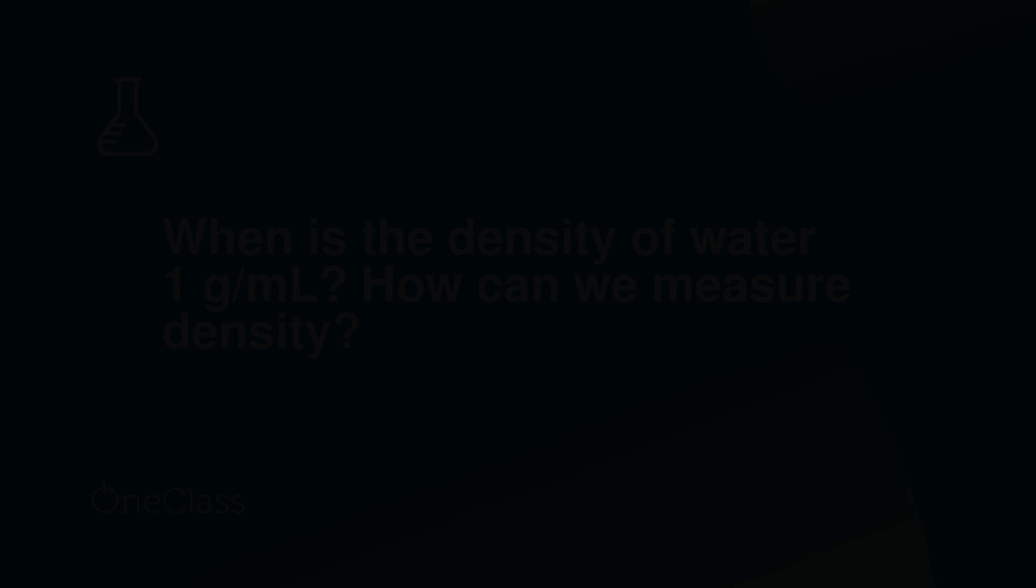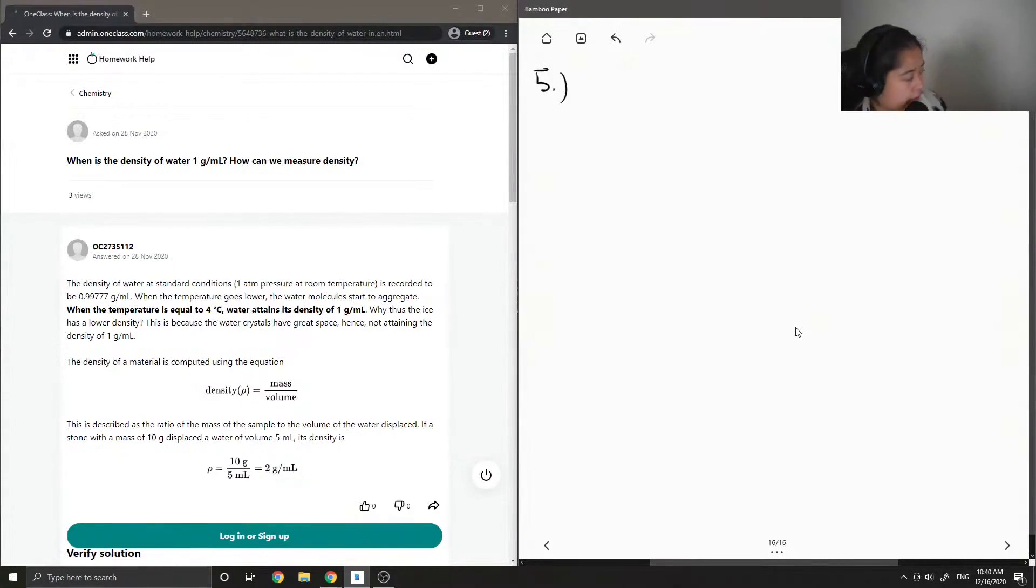To question number five, when is the density of water one gram per milliliter? How can we measure density?